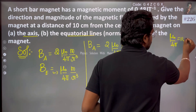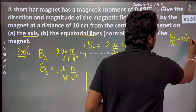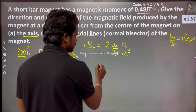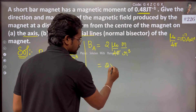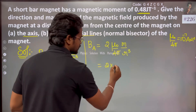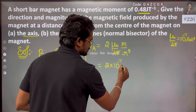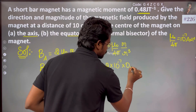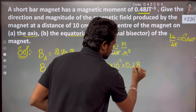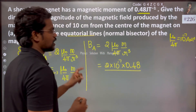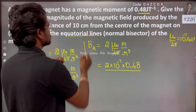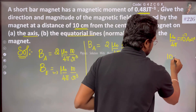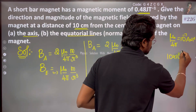For the axial case, the constant is 10 to the power minus 7. Substituting: 2 times μ₀/4π, which is 10⁻⁷, multiplied by the magnetic moment 0.48, divided by r. The distance r is 10 centimeters, which is 10 × 10⁻² meters.